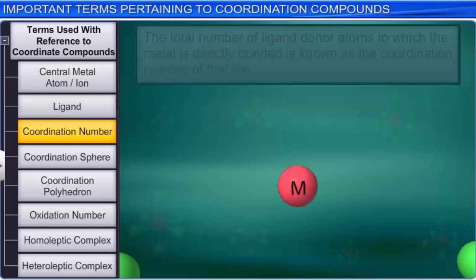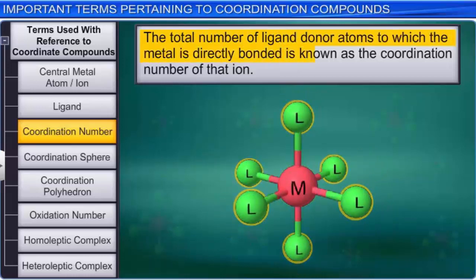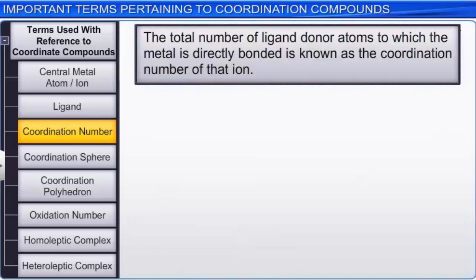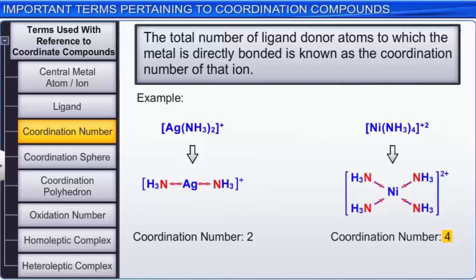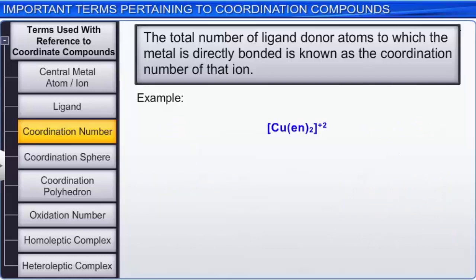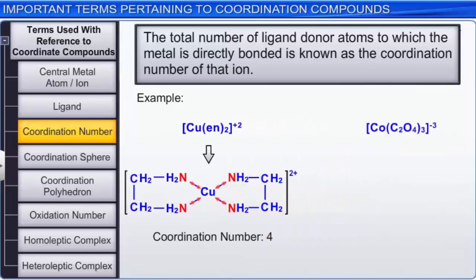The total number of ligand donor atoms to which the metal is directly bonded is known as the coordination number of that ion. For example, the coordination number of silver in the complex ion [Ag(NH3)2]+ is 2, while that of nickel in the [Ni(NH3)4]2+ ion is 4. Similarly, the coordination number of copper in [Cu(en)2]2+, a complex with a didentate ligand, is 4, while that of cobalt in [Co(C2O4)3]3-, another complex with a didentate ligand, is 6.